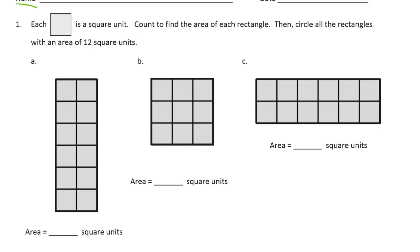When counting area, we're always counting squares, so we're talking about square units. 1, 2, 3, 4, 5, 6, 7, 8, 9, 10, 11, 12. That's 12 square units. 1, 2, 3, 4, 5, 6, 7, 8, 9. That's 9 square units.